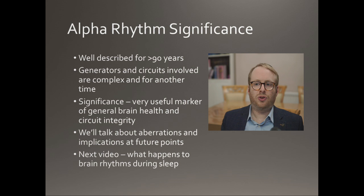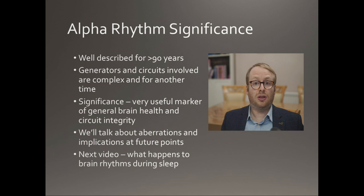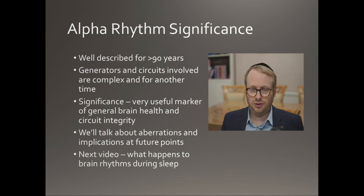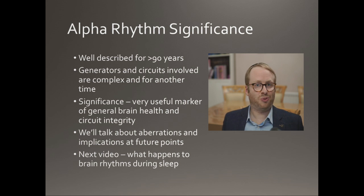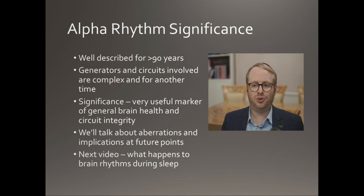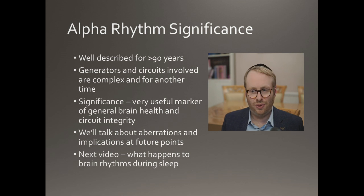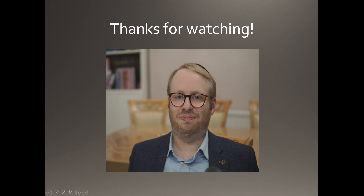The alpha rhythm has been well described for nearly a century, but the generators and circuits involved are incredibly complex, and we'll leave that for another time — this is mainly descriptive. The significance of having a good alpha rhythm is that it's a very useful biomarker of general brain health and circuit integrity. We'll talk about aberrations and implications at future points. In the next video, I'm going to discuss what happens to brain rhythms during sleep — looking forward to seeing you then.